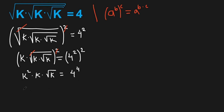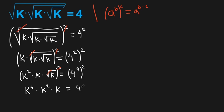Again, I'm going to raise both sides by 2. So we have k to the power of 4, times k squared, times k. All this equals to 4 to the power of 8.